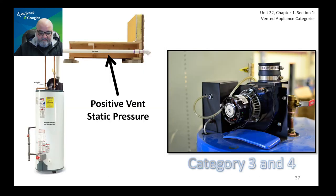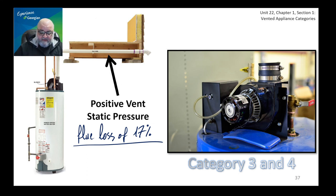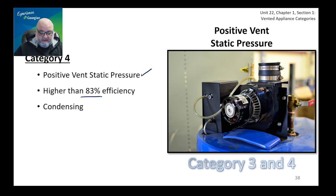Category three has a flue loss of 17% or higher — you're losing a lot of heat — but it uses positive static pressure. What makes category three different from category one is that category three has some kind of fan or blower. Category four is what you ideally want: high efficiency, with flue loss less than 17%. Today we're talking about 95%, 96%, and some manufacturers even claim 98% efficiency for gas appliances.